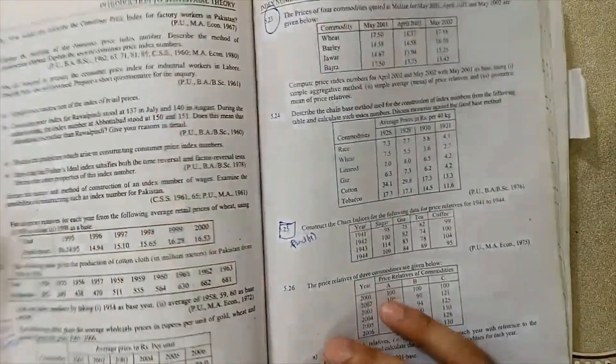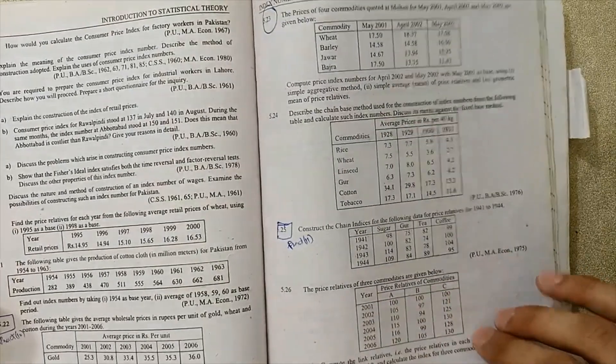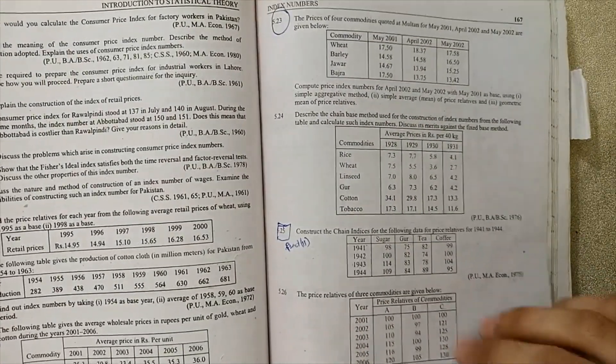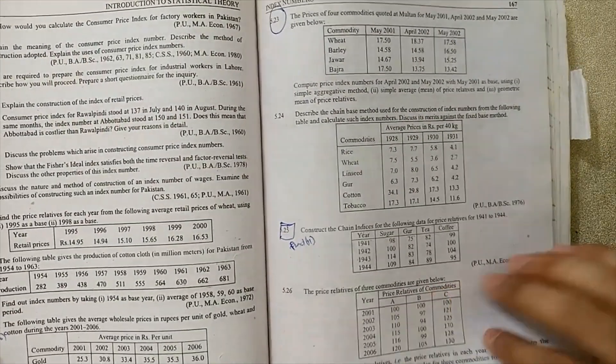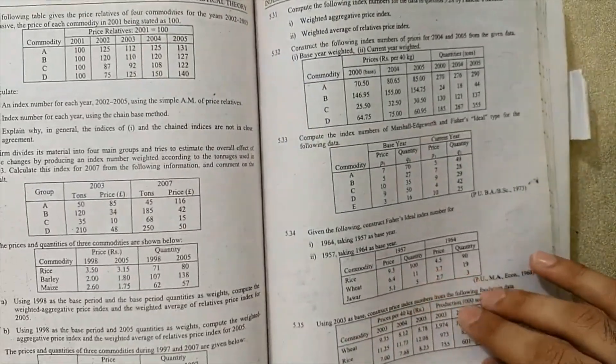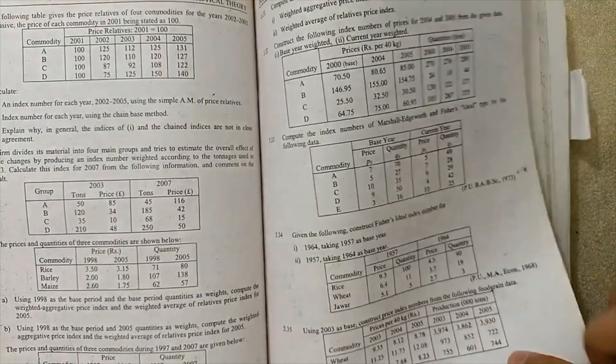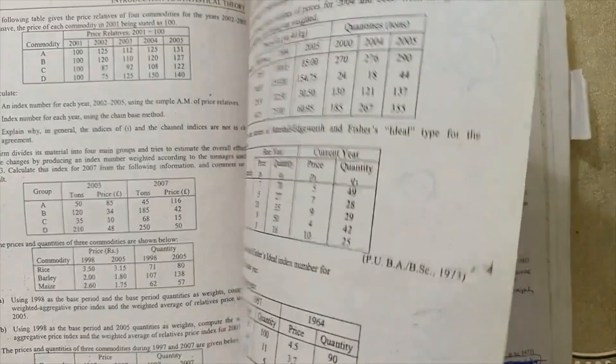And next, 5.22 is for practical, 5.23, 5.25 are very important numericals. 5.30 is very, very important for exams, university exams.